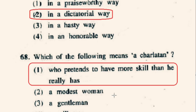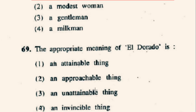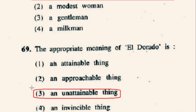Question number 69: The appropriate meaning of 'El Dorado' is — El Dorado means an unattainable thing, a place that exists only in imagination. So the right option will be 3rd option: an unattainable thing.